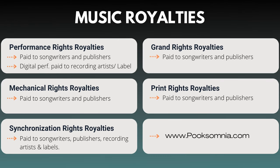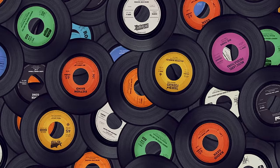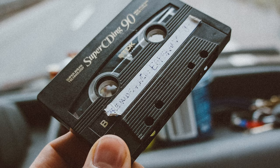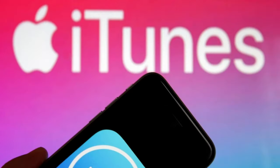Music distributors also handle the collection of royalties on behalf of the artist. This process has evolved over the years — from traditional physical distribution methods like vinyl records, CDs, and cassette tapes, to digital distribution through online platforms like iTunes, Spotify, and SoundCloud.